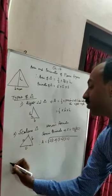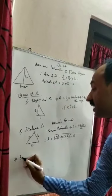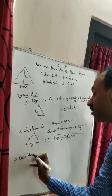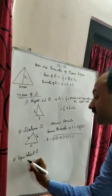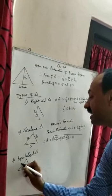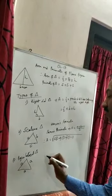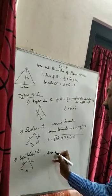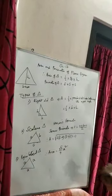Next we are going for equilateral triangle. Equilateral triangle means all the three sides are the same — A, A, A. All three sides are equal, therefore area equal to root over 3 by 4 s square.